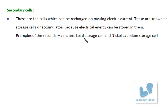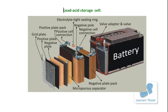The examples of secondary cells are the lead storage cell and the nickel cadmium storage cell. Let's first discuss the lead storage cell. This is a lead acid storage cell — this is a picture of it — and it is the battery which is used in automobiles.